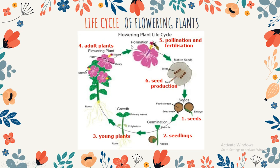In the process of reproduction, the flowering plant has to go through pollination and fertilization until it produces seeds. Seeds are very important in the life cycle of the flowering plant because the purpose of seeds is to germinate and grow into new plants. These are the stages of the life cycle of the flowering plants.